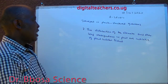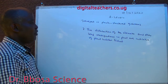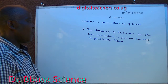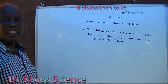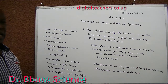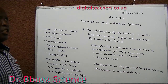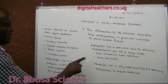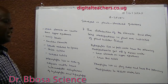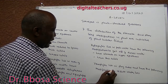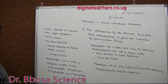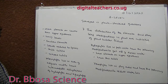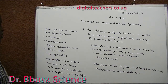Number seven: the distribution of stomata and other leaf modifications in plants are indicative of plant habitat. Discuss. You can pause and answer. Hydrophytes live in fresh water and have the following modifications to get rid of excess water: stomata on upper epidermis. Xerophytes live in dry areas and have the following adaptations to reduce water loss: more stomata on the lower than upper epidermis, hairy leaves, sunken stomata, thick waxy cuticle.